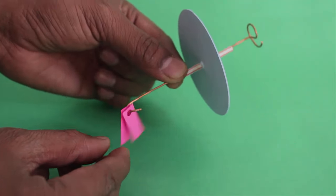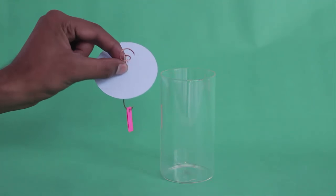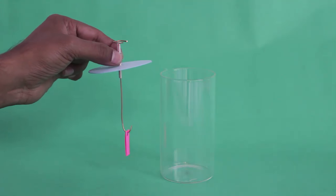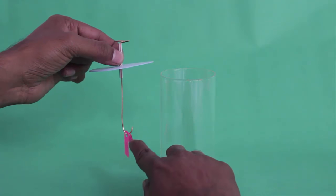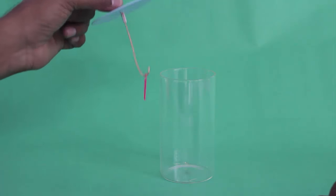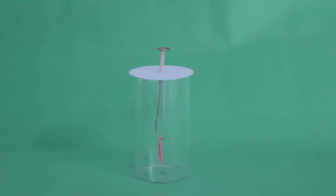Now place the card circle on the glass with the hook hanging inside the glass. Now the electroscope is ready to try it out.